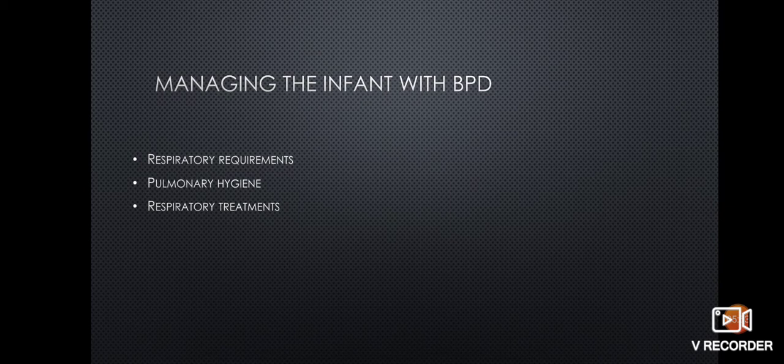Respiratory requirements for managing the infant with BPD include oxygen administration and maintaining an optimum saturation based upon gestational age, as well as obtaining capillary blood gases to follow CO2, bicarb, and base excess. Pulmonary hygiene includes CPT and suctioning, and possible respiratory treatments include inhaled medications and nebulizer treatments such as albuterol, Atrovent, and Pulmicort.